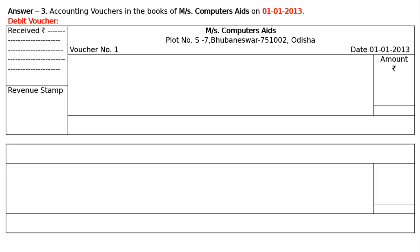Bought computer for resale — it is a computer mart, Messers Computer Aids. This firm, this sole proprietorship business, is dealing with computers — selling and purchasing computers. And bought computer for resale means to sell it. That is, computer is an expenditure for this business; it is not an asset.